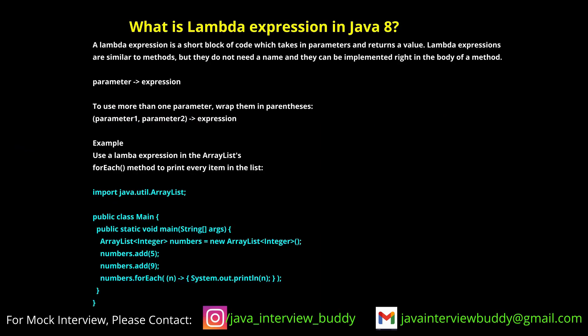What are lambdas? Lambda makes calling a functional interface easy. It automatically creates the implementation for our functional interface. For example, the Runnable interface has only one method — run. Using Lambda, we don't need to write the full implementation class. Lambda makes functional interface implementation concise.